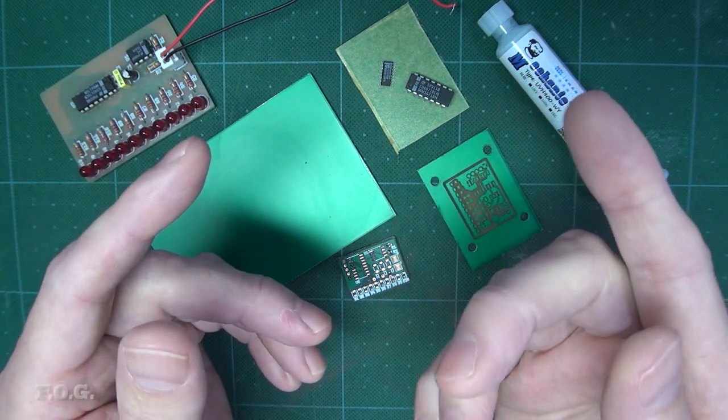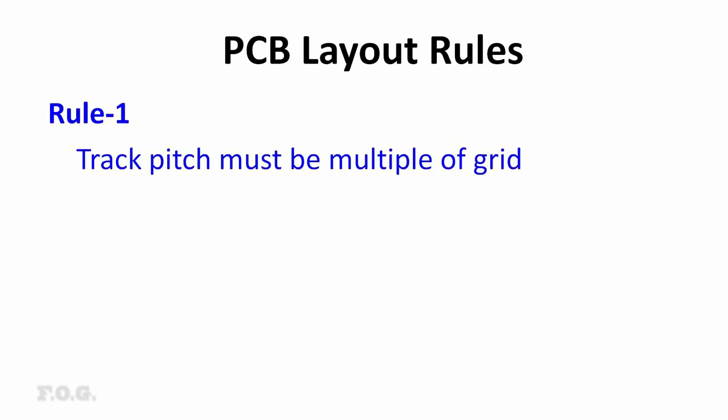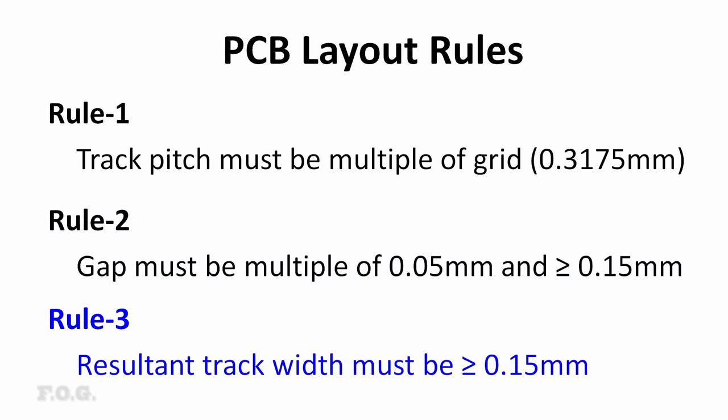So with this 0.3175 millimeter working grid in mind, let me explain the new rules that I'm using to set the size of my track widths and the gaps between them. So the first rule is the track pitch must be a multiple of the working grid. In our case, the 0.3175 millimeters, right? And the second rule is the gaps must be a multiple of 0.05 millimeters and have a minimum size of 0.15 millimeters. And the third rule is the resultant track width must be at least 0.15 millimeters.